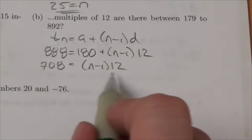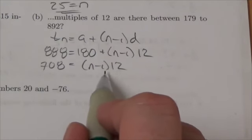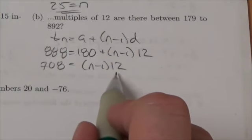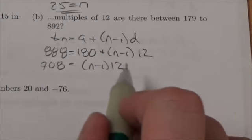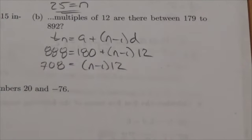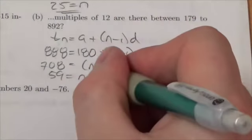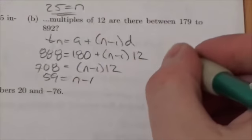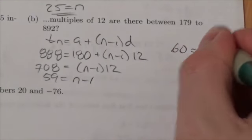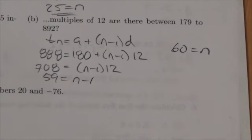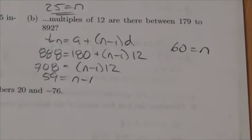708 divided by 12 gives me 59 equals n minus 1. Bringing the 1 over, it turns out there are 60 multiples of 12 between 179 and 892.